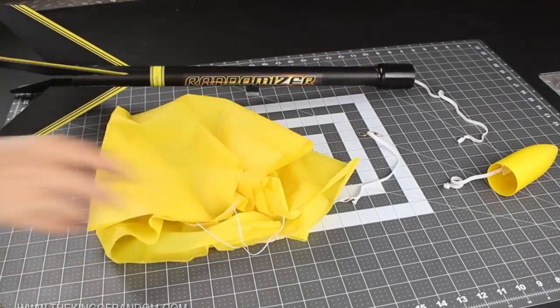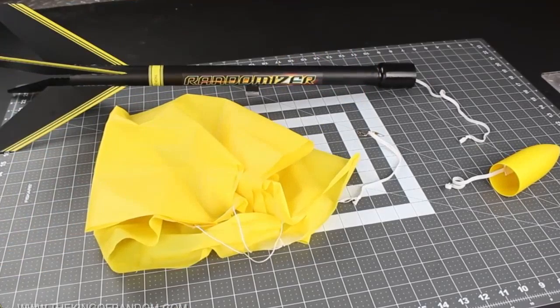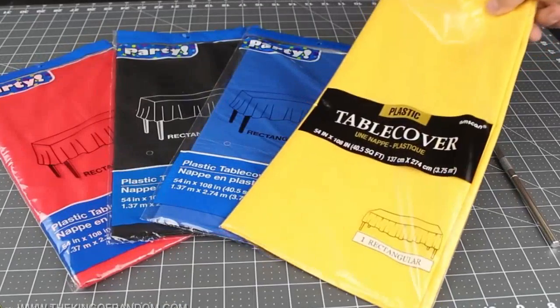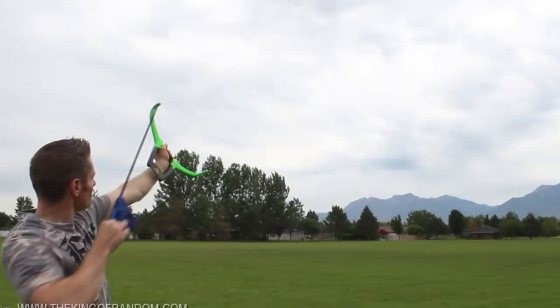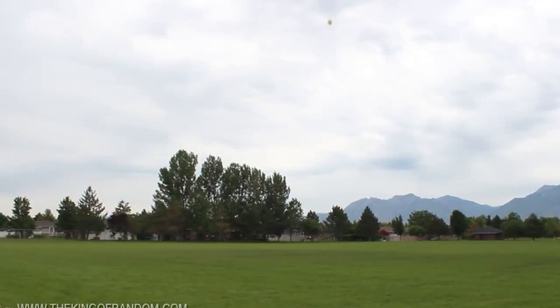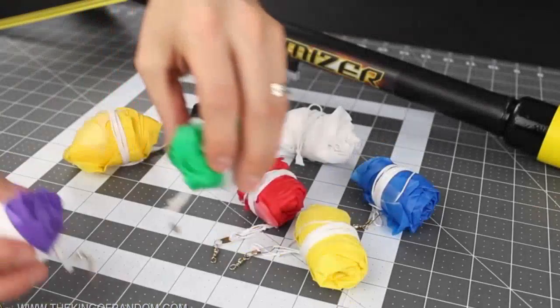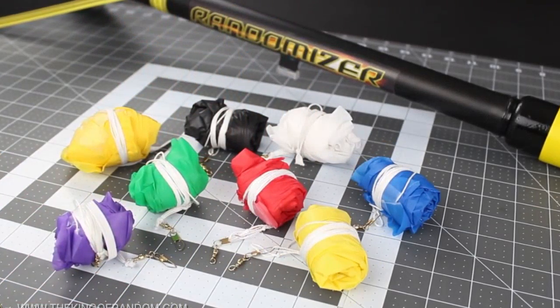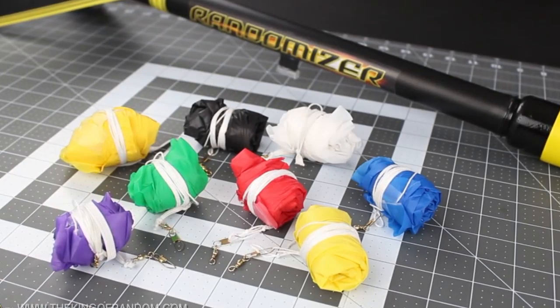The very last step is to add one of the parachutes I showed you how to make in a previous project. These simple chutes are made from dollar store table covers, and not only work for the randomizer rocket, but can be used to make sky balls as well. I made 8 of them for a dollar, and I'm confident you can as well, so look for how to make simple chutes and sky balls in other project videos.